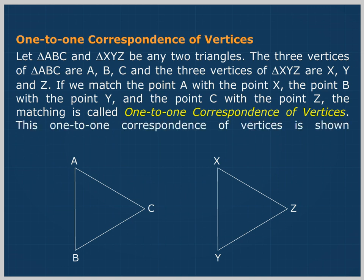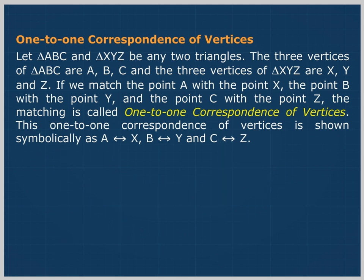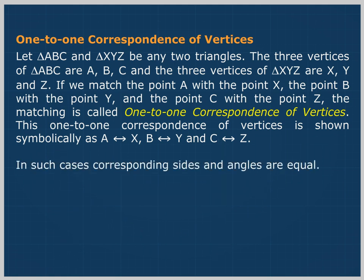This one-to-one correspondence of vertices is shown symbolically as: A corresponds to X, B corresponds to Y, and C corresponds to Z. In such cases, corresponding sides and angles are equal.